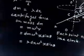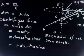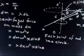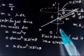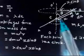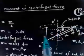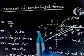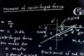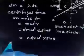We have to find the moment of centrifugal force about point C. The perpendicular distance of this force from point C — since the distance along the rod is x and the angle is theta — is x cos theta. So this distance is x cos theta.